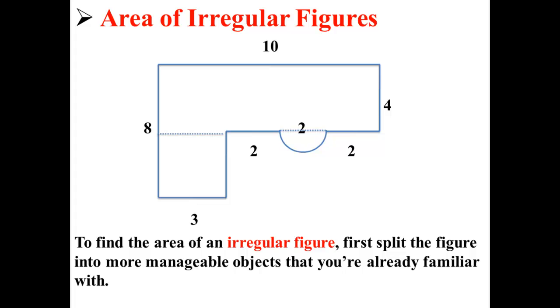Here, I'm going to split it up a little bit. So now we have one large rectangle, one smaller rectangle, and one half circle. We know how to find the areas of all of those objects.